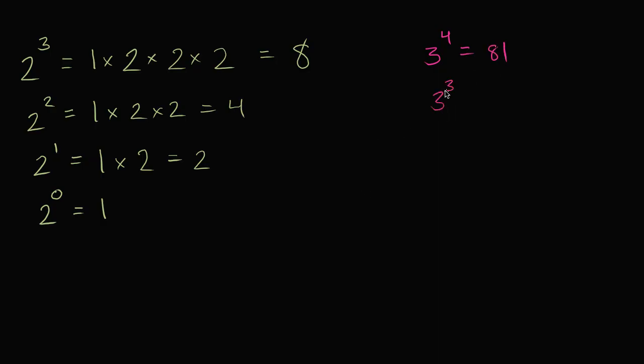If I said 3 to the 3rd power, that's 3 times 3 times 3, which is 27. 3 to the 2nd power is equal to 9. 3 to the 1st power is equal to 3.